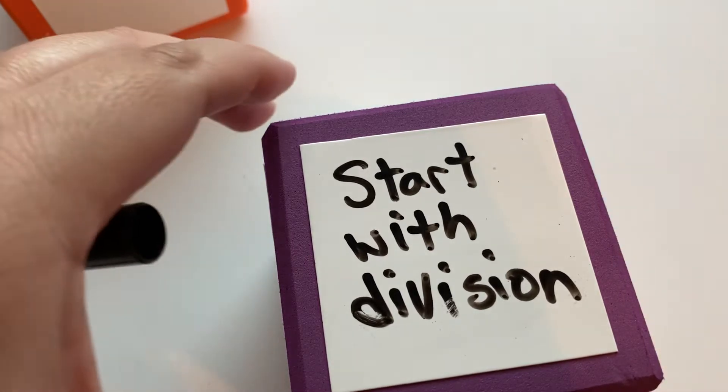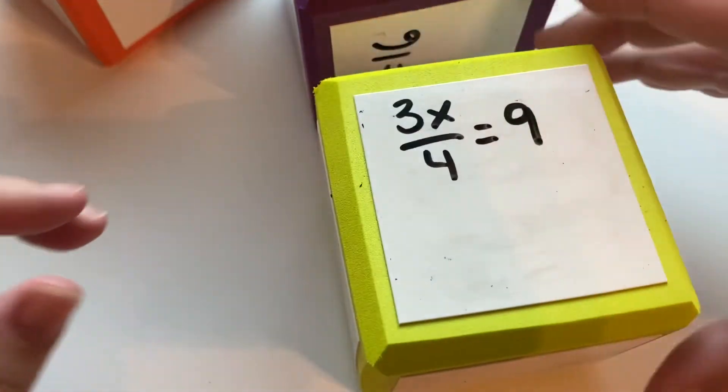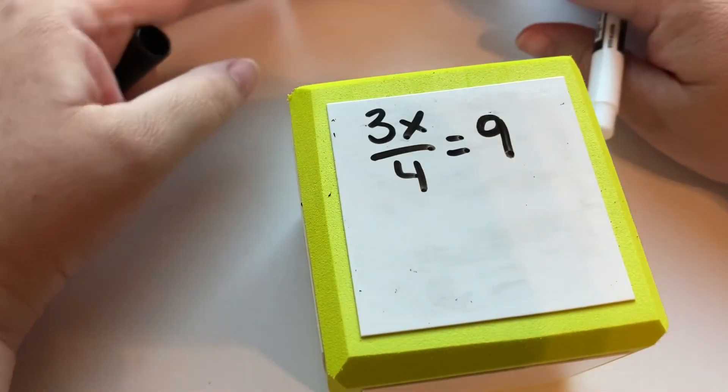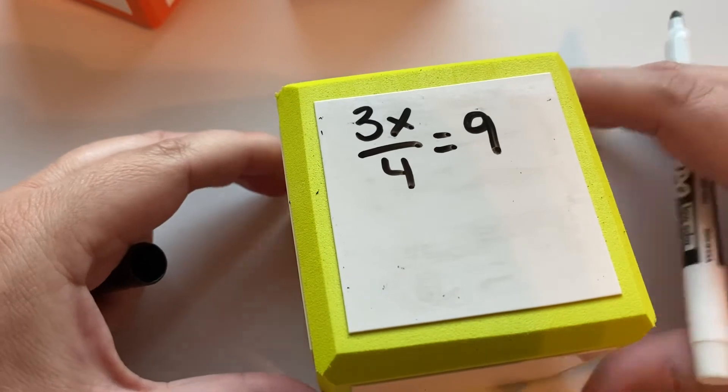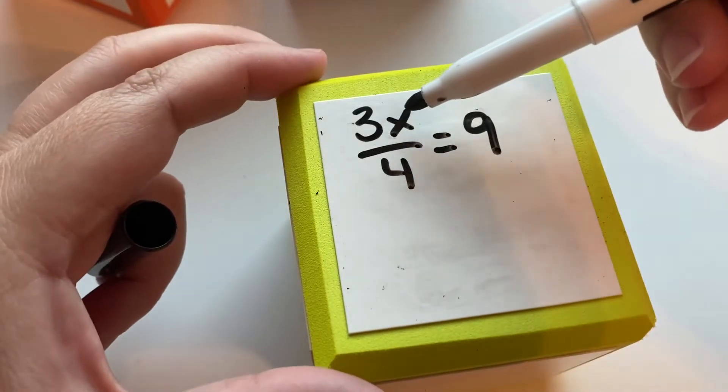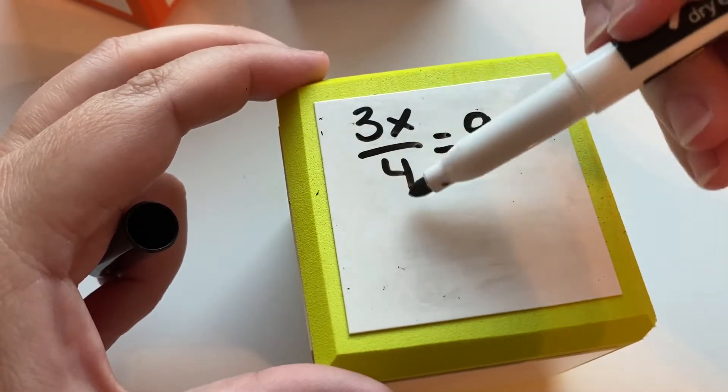So we're going to start with the division. Let's look at an example. So move that block. And we've got here 3 times x, so there's our times, divided by 4.